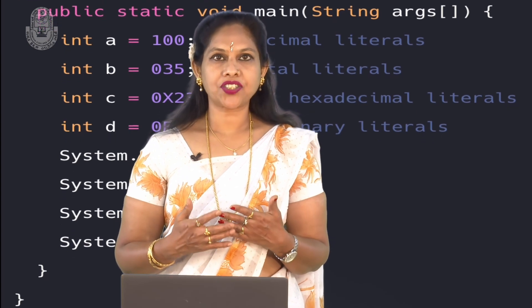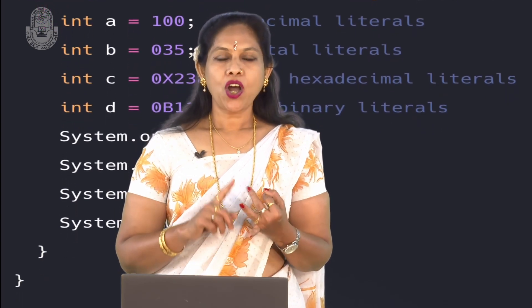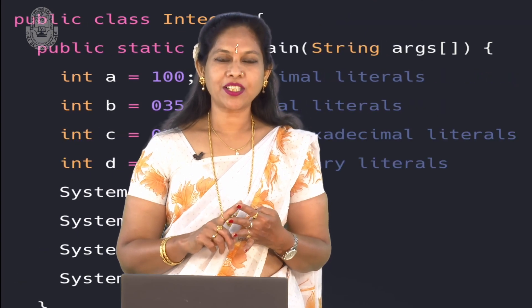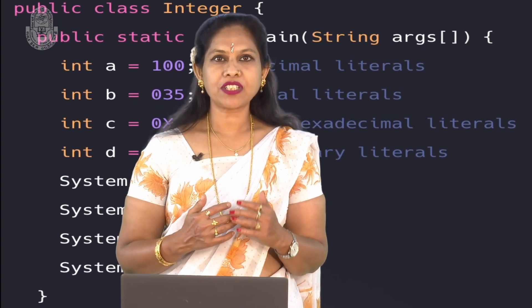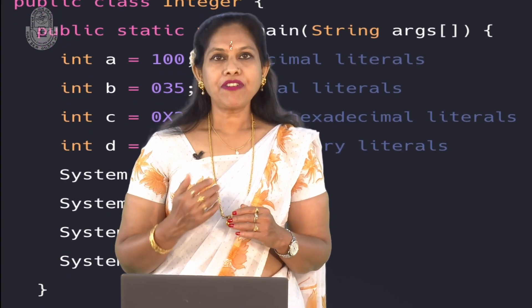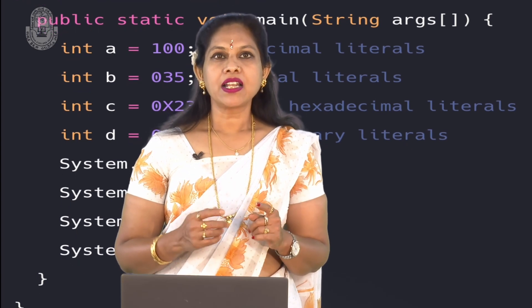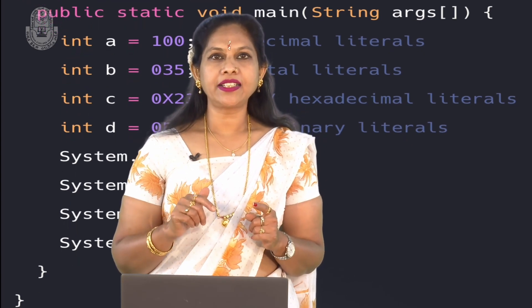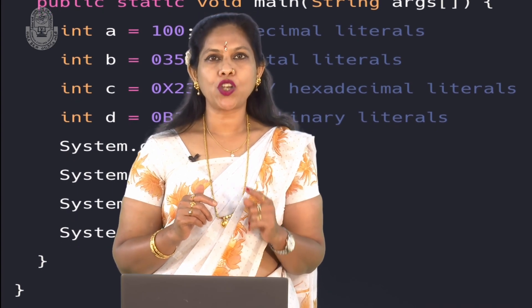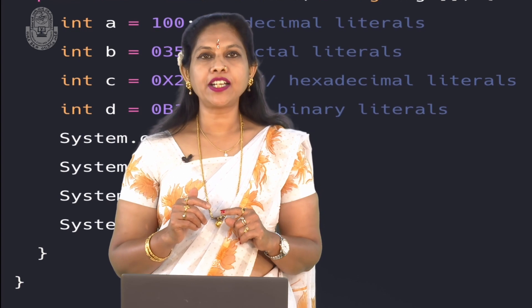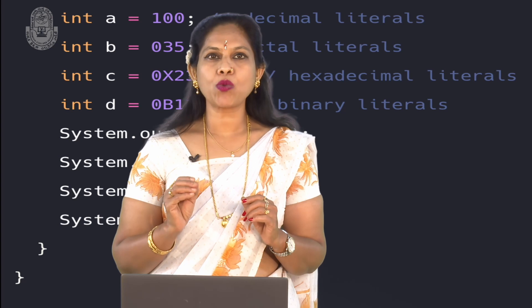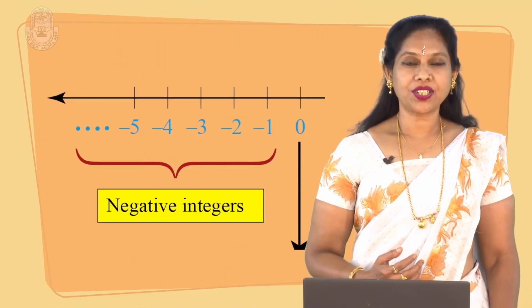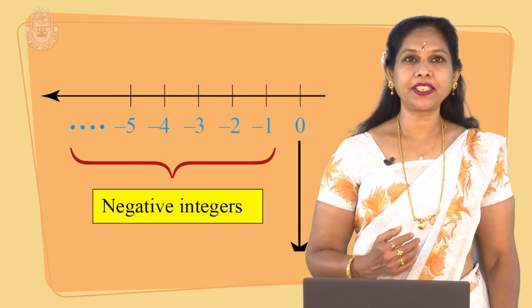Number literals. There are several integer literals such as int, long, octal, hexadecimal, etc. 4 is an example of a decimal integer literal of type int. If a decimal integer literal is larger than the int, it is declared to be of type long. A number can be made long by appending capital L or small l to it. Negative integers are preceded by the minus sign.